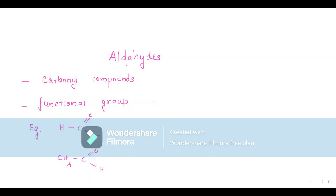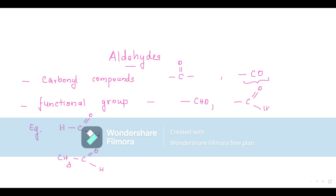Welcome back to Tales of Chemistry. Today let us learn something regarding aldehydes. Aldehydes are carbonyl compounds. What do we mean by carbonyl compounds? Aldehydes contain a C double bond O group. So the presence of the CO group makes aldehyde a carbonyl compound. The functional group in an aldehyde is CHO, which can be written as C double bond O and single bond H.